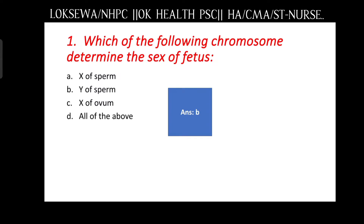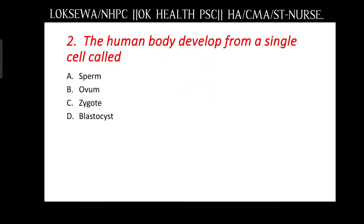The answer is the Y chromosome — the Y of sperm. Next question: the human body develops from a single cell called — sperm, ovum, zygote, or blastocyst?